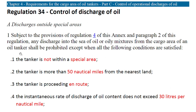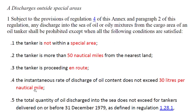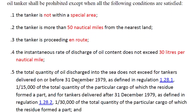For an oil tanker to discharge from the cargo area outside a special area, the following conditions must be met: the tanker must not be within a special area; the tanker must be more than 50 nautical miles from the nearest land; the tanker must be proceeding en route; and the instantaneous rate of discharge of oil content must not exceed 30 liters per nautical mile. The definition of instantaneous rate of discharge can itself be a separate exam question.